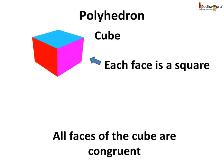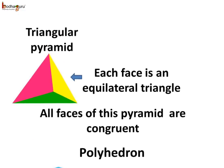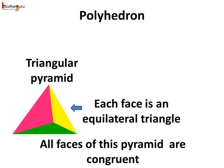If we observe, few polyhedra have the same kind of faces, like this cube. In the cube, each face is a square, so we can say all the faces of this cube are congruent. Here again, in this triangular pyramid, each face is an equilateral triangle, which means all the faces of this pyramid are congruent.